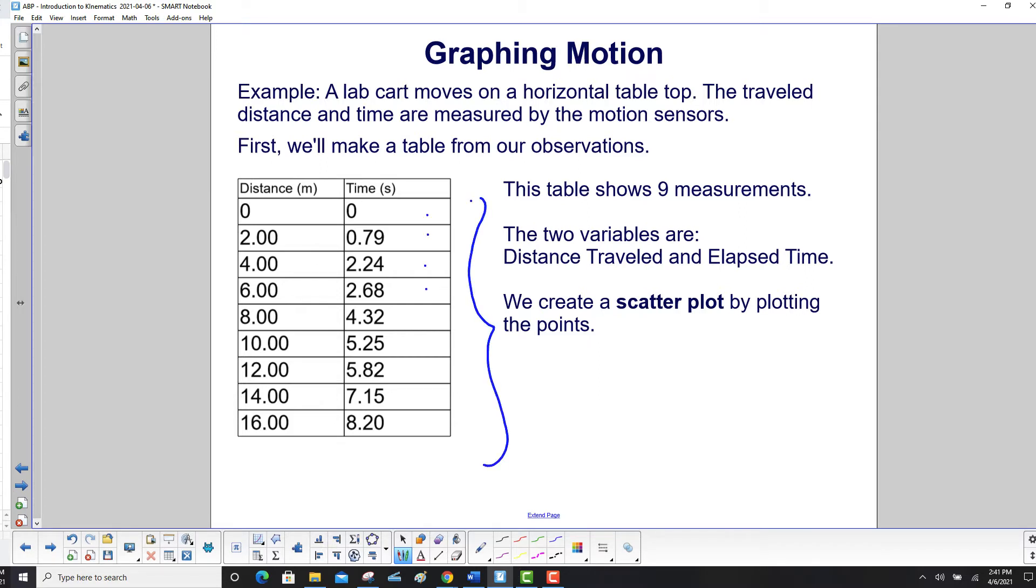The two variables are distance traveled and elapsed time. And notice how we put the units in the titles of these columns. This way you don't have to repeat them all throughout.